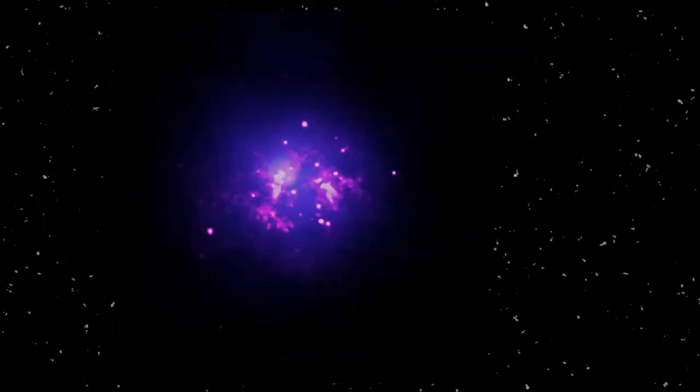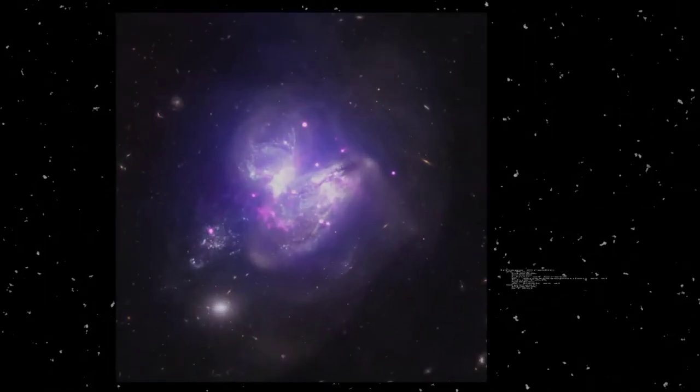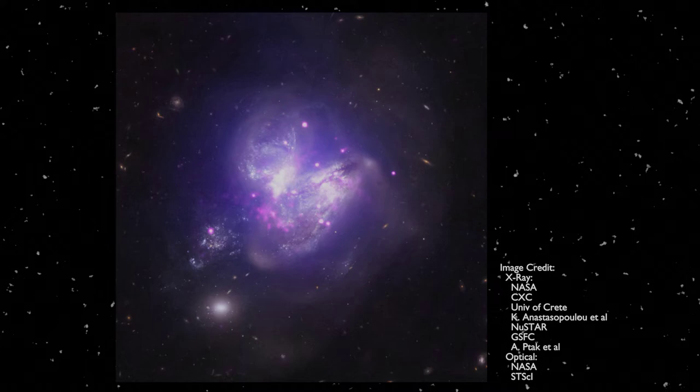The last contribution I want to highlight has to be from black holes and AGN. You can't talk about NuSTAR without black holes and AGN. So for my last contribution I want to highlight, I want to talk about the source ARP-299. ARP-299 is a source where we see two galaxies merging or colliding.